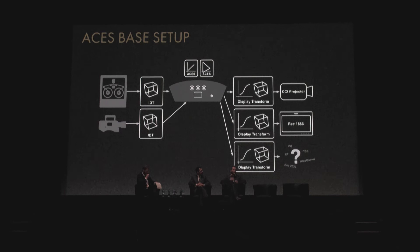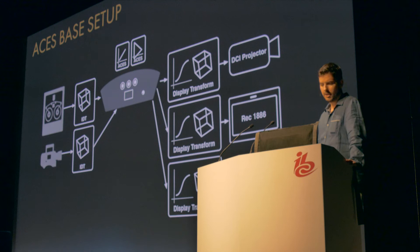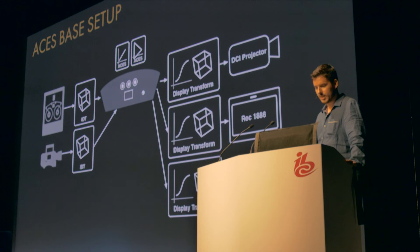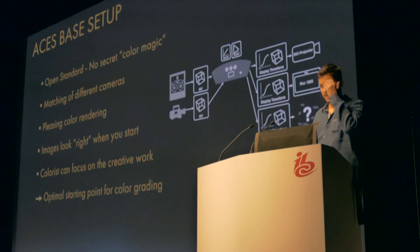This ACES color space is a high dynamic range and wide gamut color space, which means these transforms can be done without loss of image quality. All the footage gets conformed to one unified color space. Then the graded ACES images get transformed on the output side and tone-mapped to the dynamic range and characteristics of the output display — for example, a projector calibrated to DCI-P3 or a video display calibrated to Rec. 1886. At the bottom I've also added future color spaces that are in progress or already done.